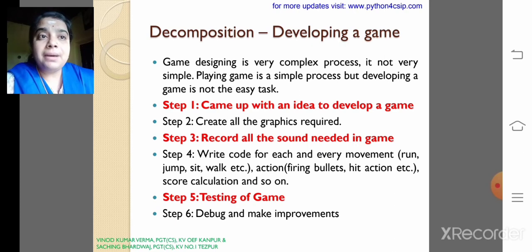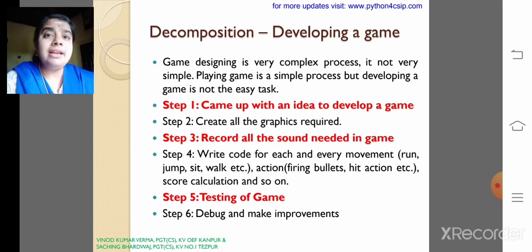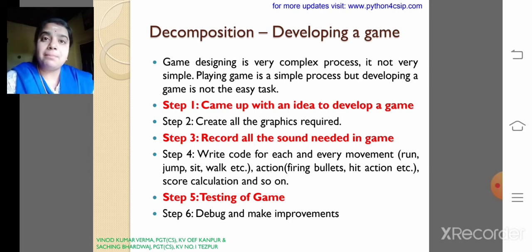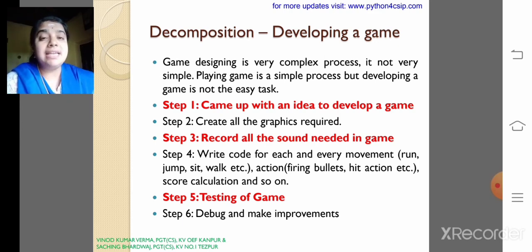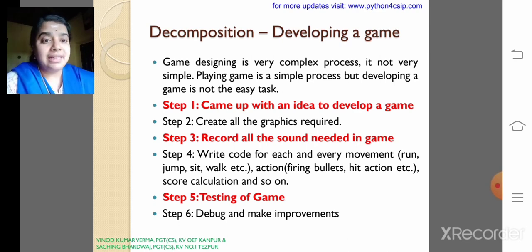How about developing a game? The steps include: coming up with an idea, creating all the graphics required, recording all the sounds needed, writing code for every action — run, jump, skip, sit, walk, firing bullets, hitting actions, and so on — then score calculation, followed by testing the game, and finally debugging and making improvements.